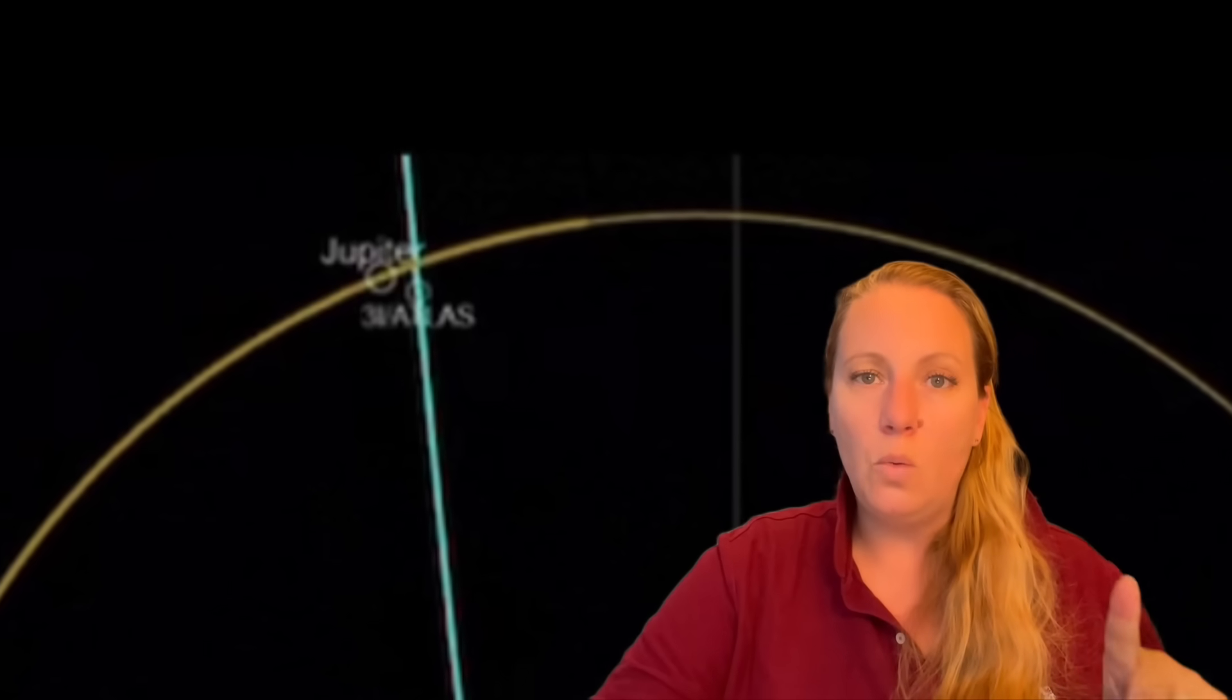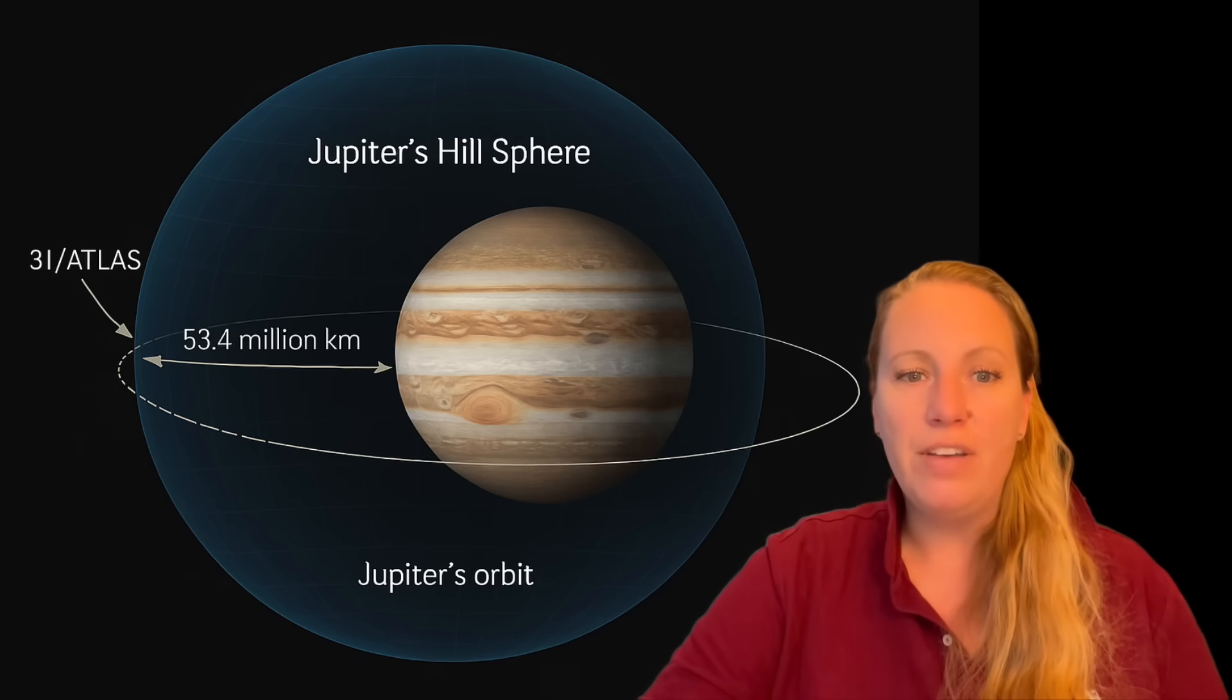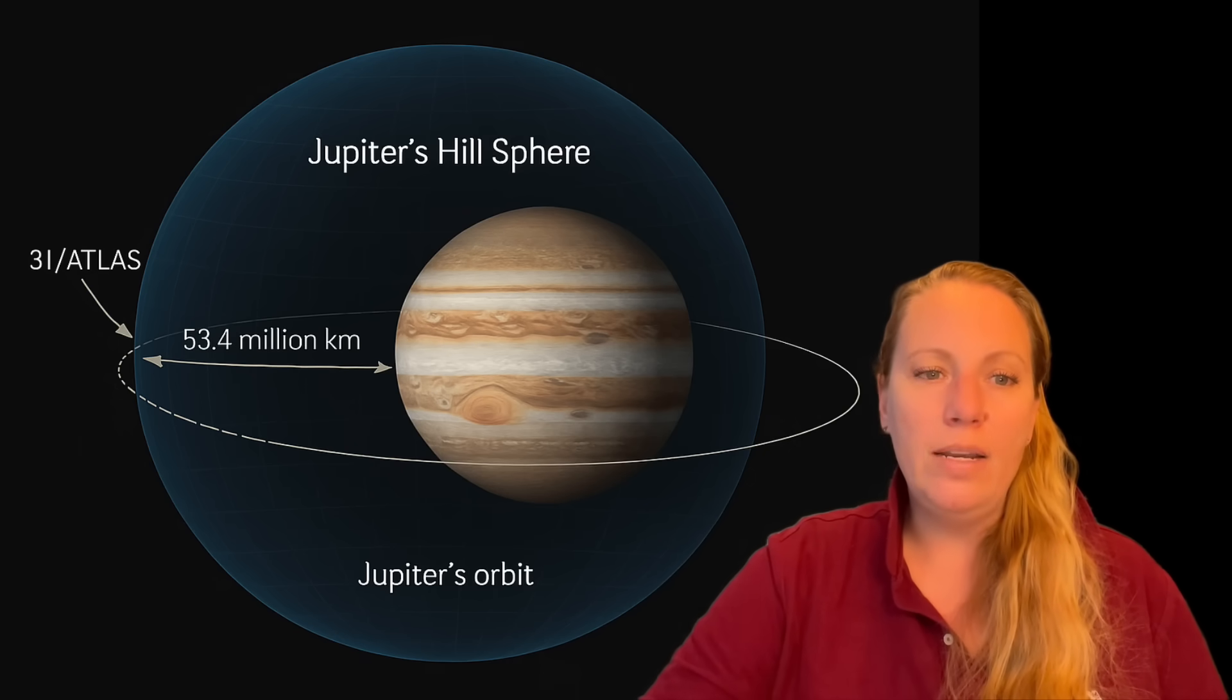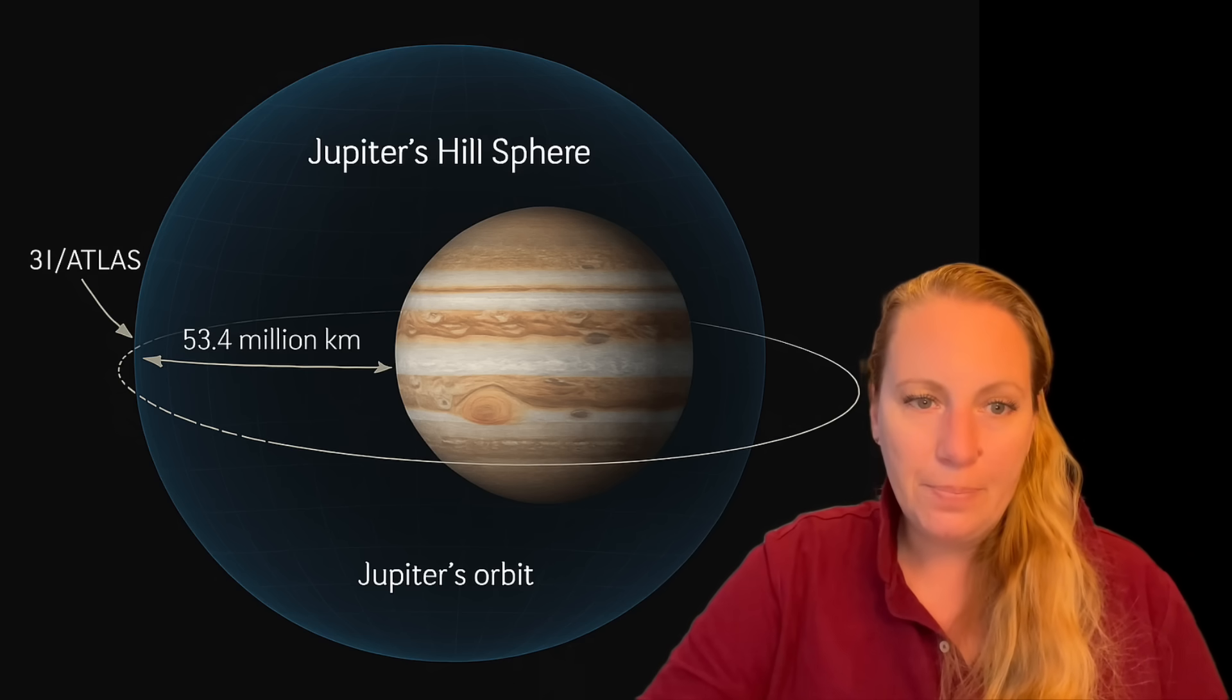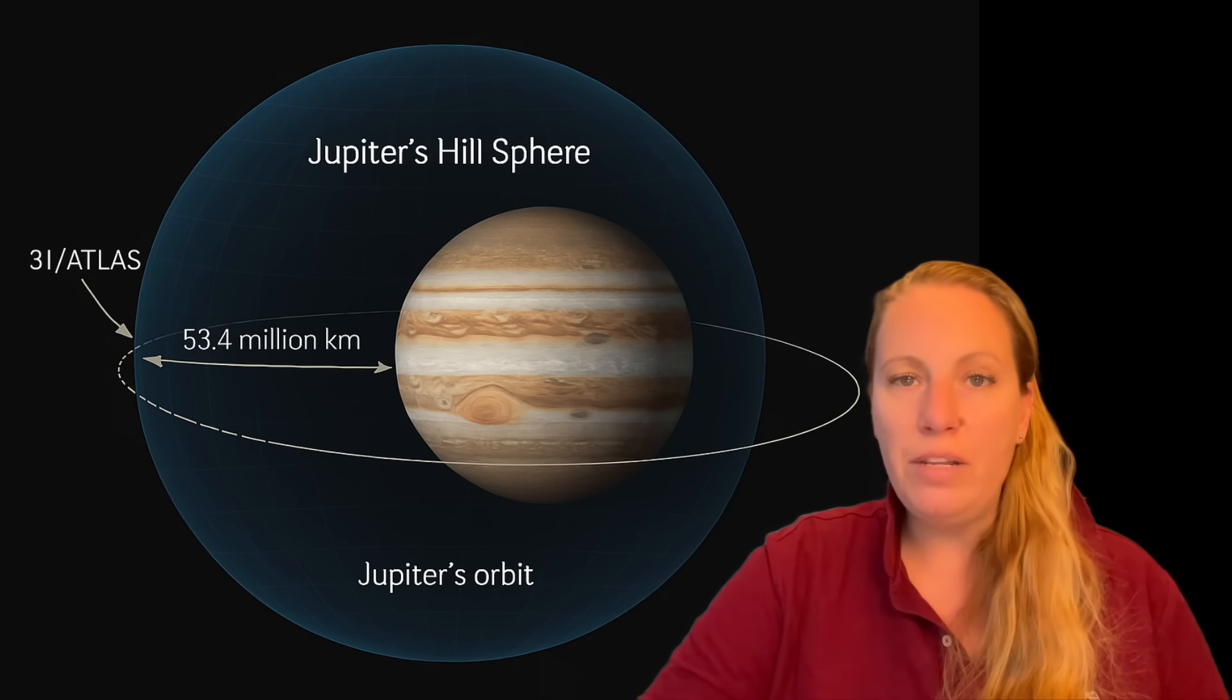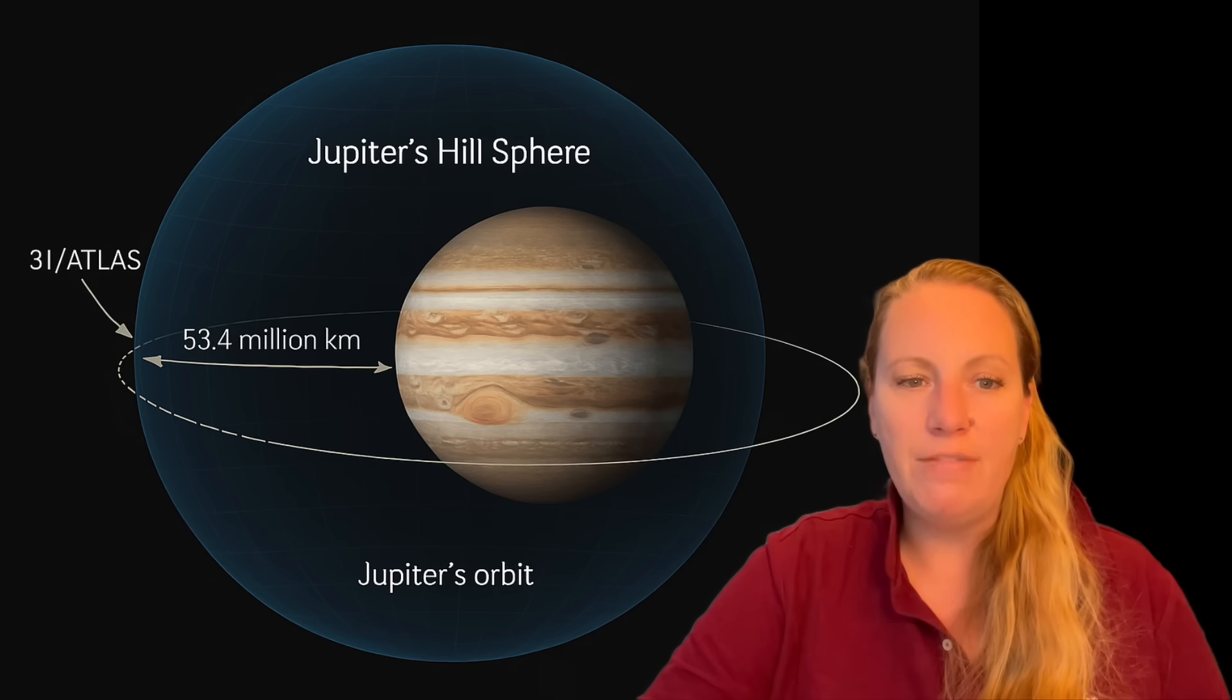The non-gravitational acceleration of 3i Atlas is updated continuously on NASA's JPL Horizons. You can see where it's going. And on October 30th, 2025, the radial acceleration A1 was 1.6 times 10 to the minus 6 AU per square day. But now on November 24th, when they recalculated it, A1 dropped to 4.7 times 10 to the minus 7 AU per square day, a factor of 4.